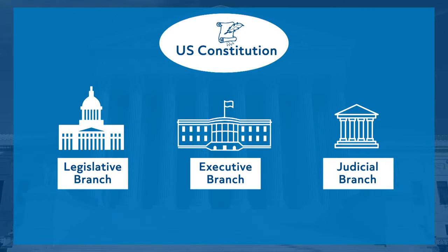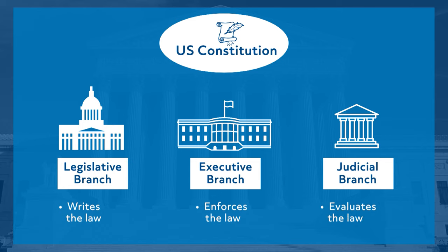The two other branches of the U.S. government are the executive and judicial. The legislative branch is responsible for writing the laws, the executive for enforcing them, and the judicial for ensuring that those laws are constitutional and for adjudicating disputes between citizens and the government. Having three branches of government creates a balance of power, which helps to prevent a group of people or even a single person from exercising too much control over the country.